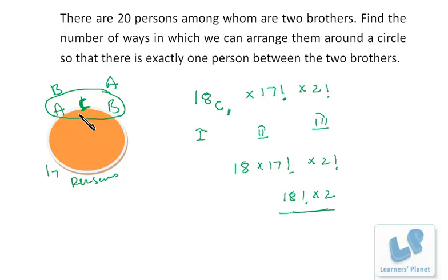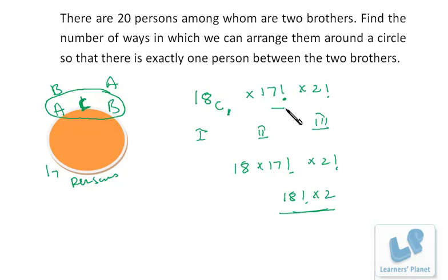To recap: we had 20 persons, two of whom are brothers A and B. We chose 1 person from the remaining 18 to sit between them, treated those three as a single unit, then arranged 18 entities around the circle in 17! ways, and finally arranged A and B in 2! ways. The answer is 2 × 18!. The difficulty level increased gradually but the core concept remained the same.